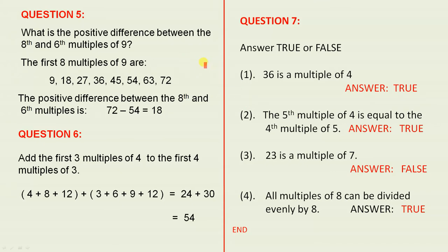Question 5: What is the positive difference between the 8th and 6th multiples of 9? So here we have the 9 times tables. There's the eighth multiple: 9 × 8 = 72.